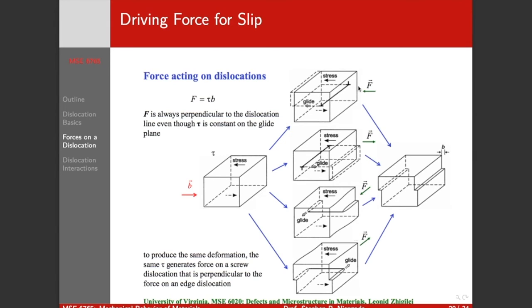From the same applied stress, we're going to have the same tau, but our dislocations are going to move in different ways. But the force acting on our screw is perpendicular to the force acting on the edge. And this just goes right back to the geometry of dislocation motion that we talked about at the very beginning of this lecture.